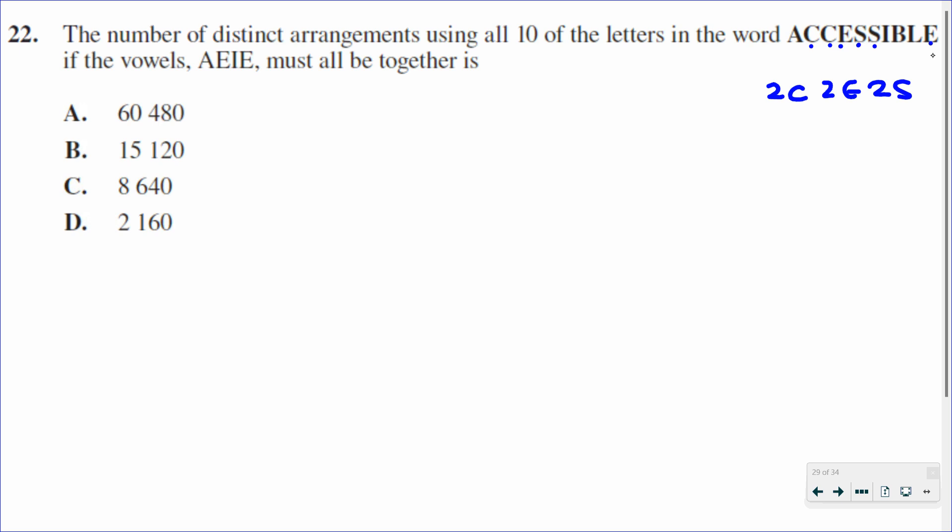So first of all, we're going to do a group and then arrange. We're going to solve it normally as though there were no repetitions, and then we'll divide by the repetitions. If we group all of the vowels together, we're going to group them as though they are one letter.